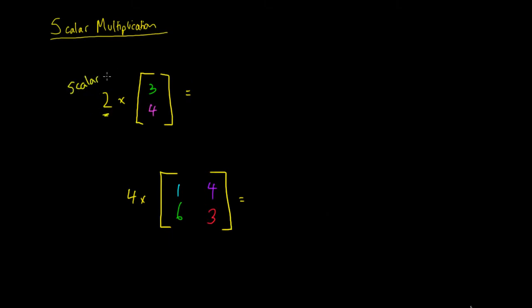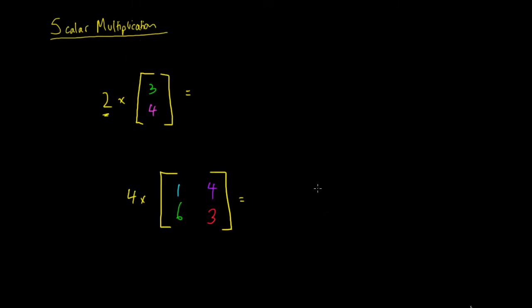It's called a scalar because it is a number with only a magnitude. We just need to know that if we have a number out the front and we're not multiplying two vectors together — so we've just got this number here, this 2 for instance or this 4 — how do we actually multiply that by a matrix?